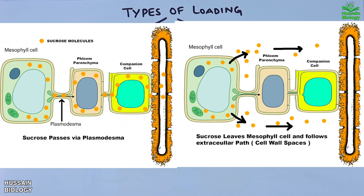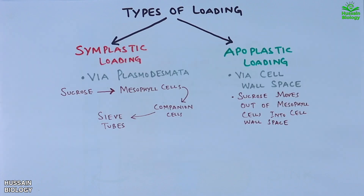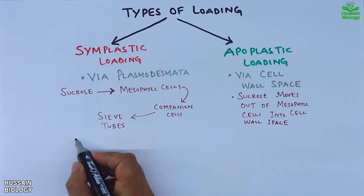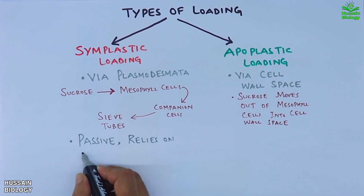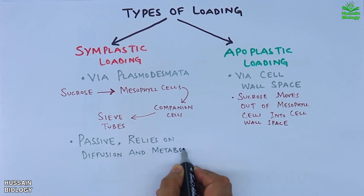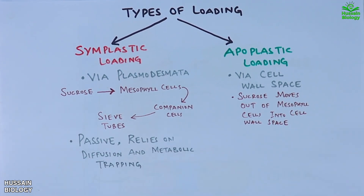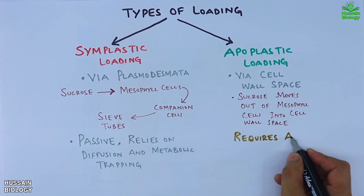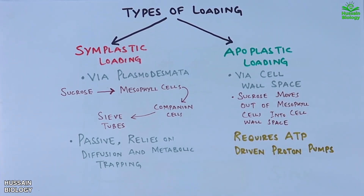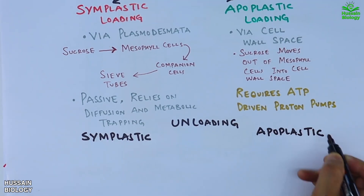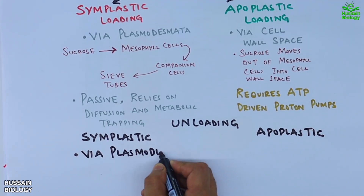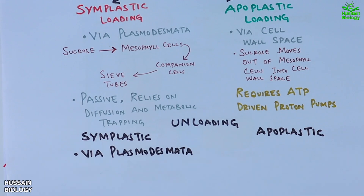Symplastic transport is passive and relies on diffusion and metabolic trapping, whereas apoplastic transport requires ATP-driven proton pumps. In the same way, unloading occurs — symplastic unloading is done via plasmodesmata and apoplastic unloading is mediated via cell wall spaces.